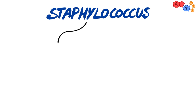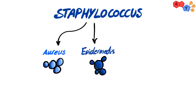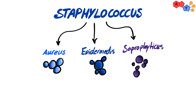We're going to discuss three species of staph: staph aureus, staph epidermidis, and staph saprophyticus. All three bacteria are gram-positive, which take a blue or violet color if we apply gram-staining. They're arranged in clusters like grapes.